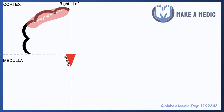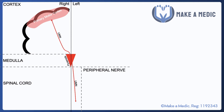Further down at the bottom of the brainstem we have the medulla, and within the medulla we have the pyramids. If we keep going down we have the spinal cord, and from the spinal cord will emerge the peripheral nerves that go on to innervate our muscles.